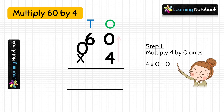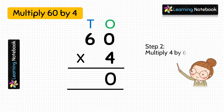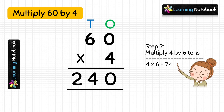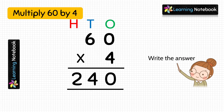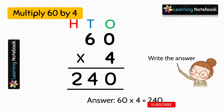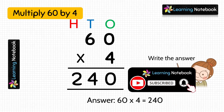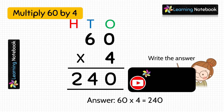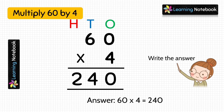So let's write 0 in the answer at the 1's place. Now in step 2, we will multiply 4 by 6. 4 into 6 equals to 24. So let's write 24 in the answer. Here 4 is at the 10's place and 2 is at the 100's place. So our answer is 240. Students, we just learnt how to multiply a two-digit number by a one-digit number without regrouping or carrying.